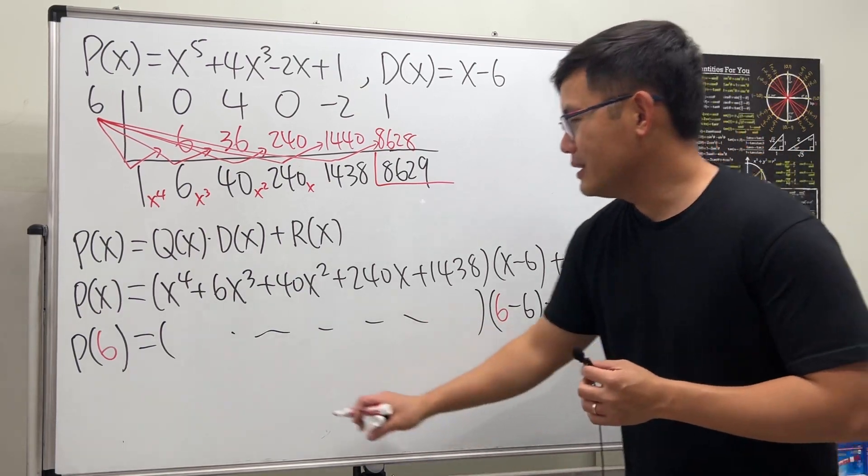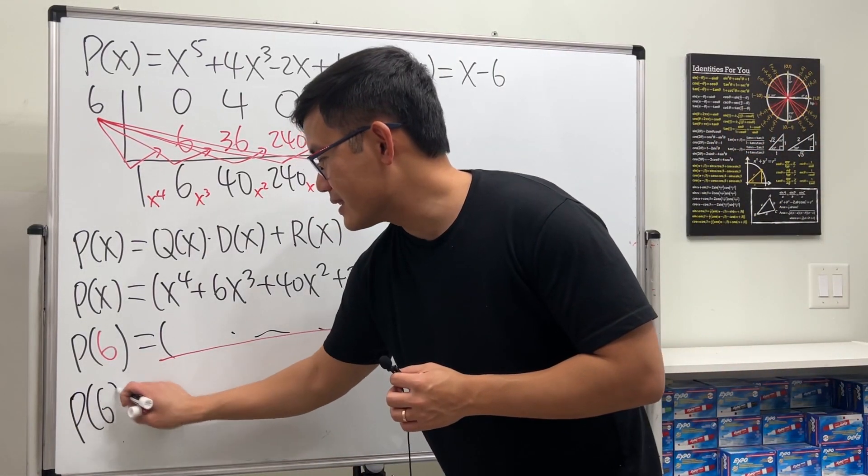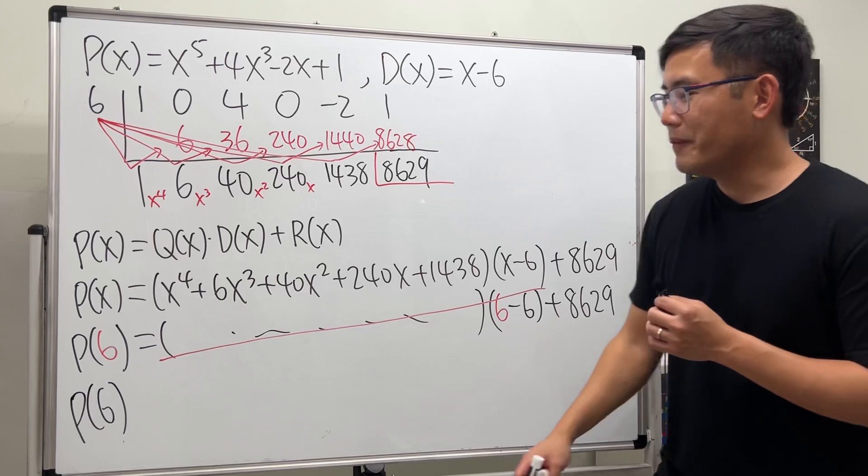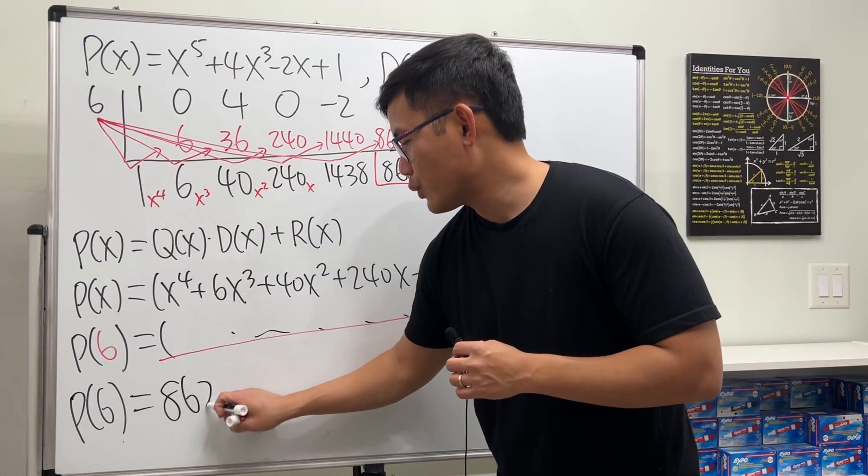So we can say P(6), thanks to this particular form, is equal to 8629.